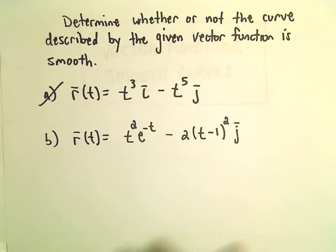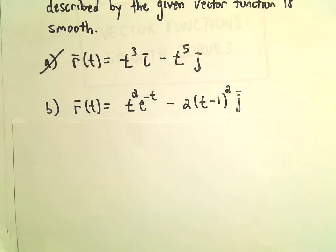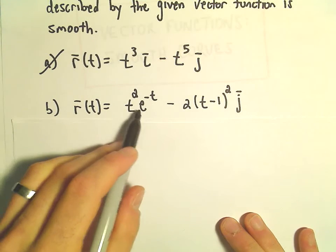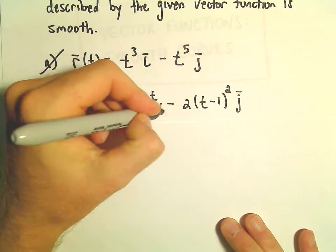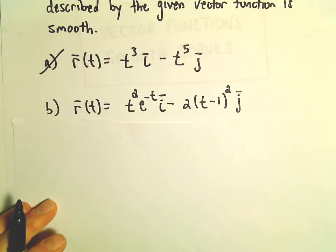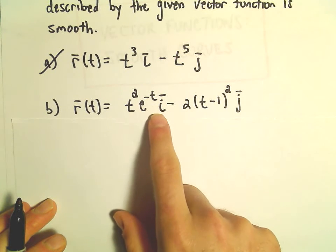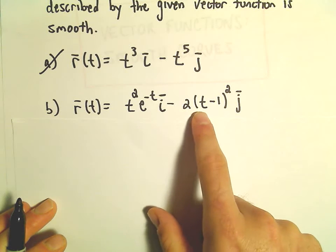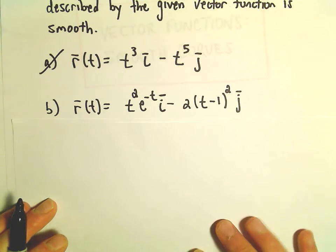Alright, here we're going to look at another example of determining whether or not a vector function is smooth. So in part b, we have r of t equals t squared times e to the negative t. I left out my i there, definitely want to stick that in there. So t squared times e to the negative t times i minus 4 times t minus 1 squared times j.